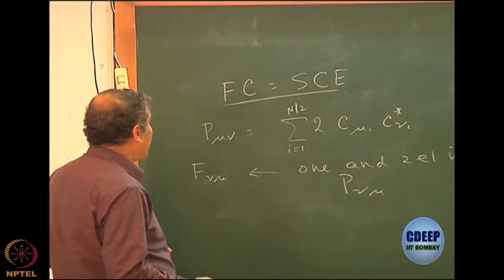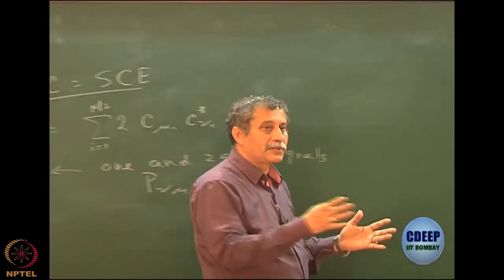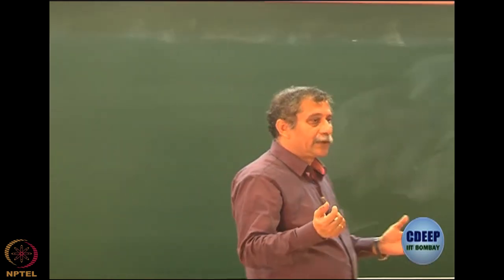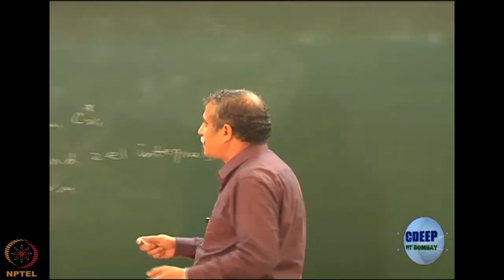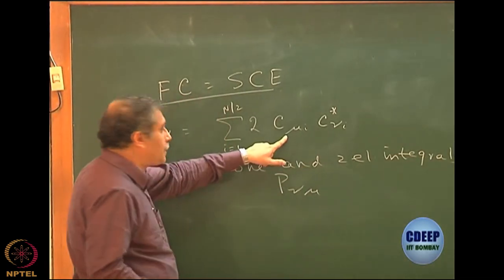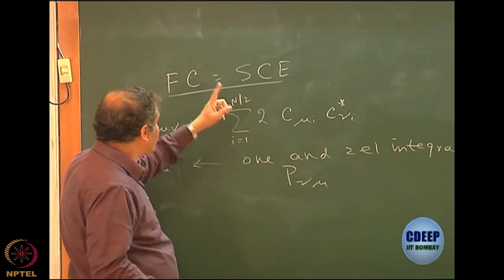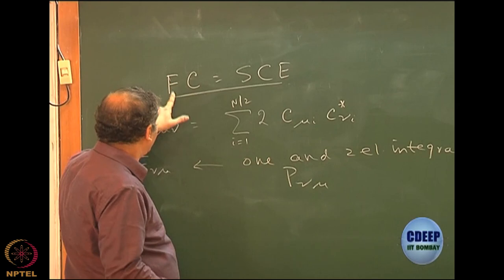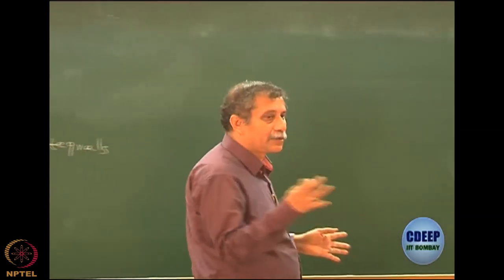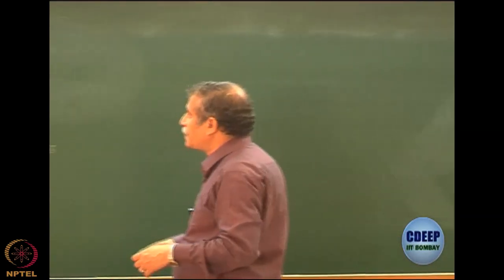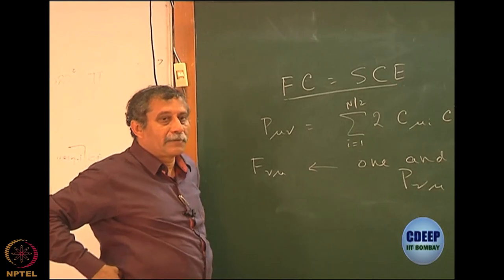Once you write F in terms of P, the question is how do you solve it? I told you the iterative method: starting from a Born-Oppenheimer geometry, choose a basis set A_μ, then calculate the one- and two-electron integrals, then guess P — because that is the important thing — construct the Fock matrix, solve the equation, get new coefficients, construct P, again construct the Fock matrix, and continue until it converges. That was the basic iteration. Let me complete the story because there is a subplot on how to solve this, which we have not yet discussed.